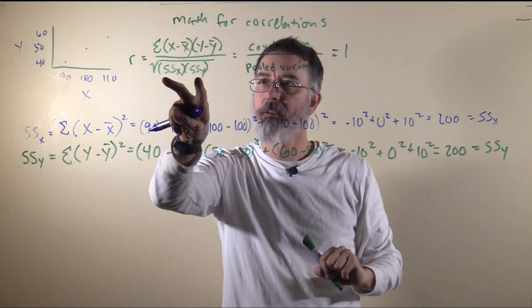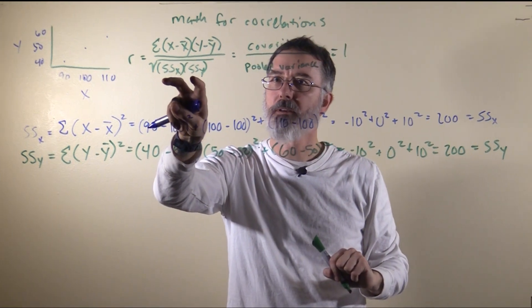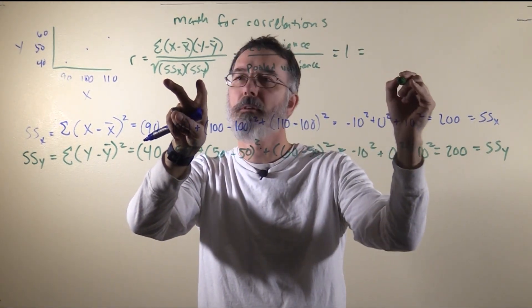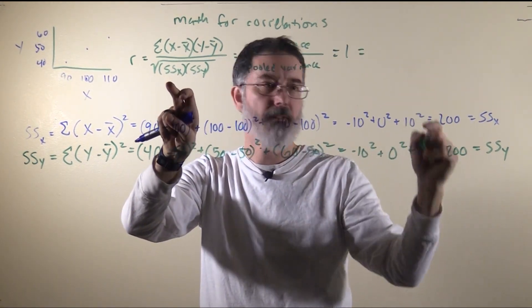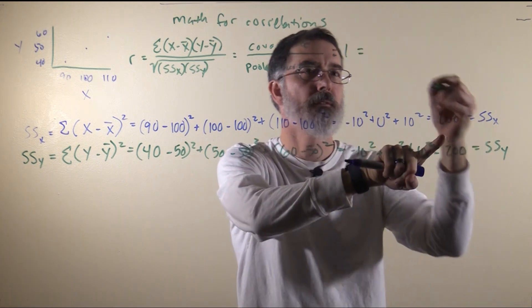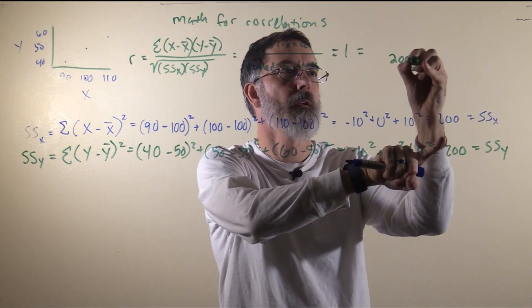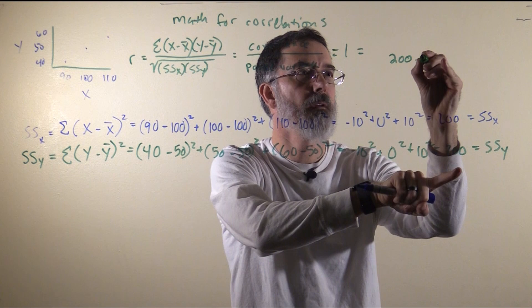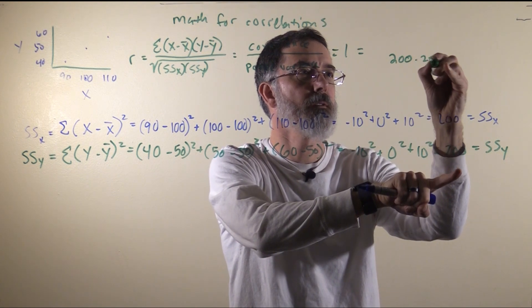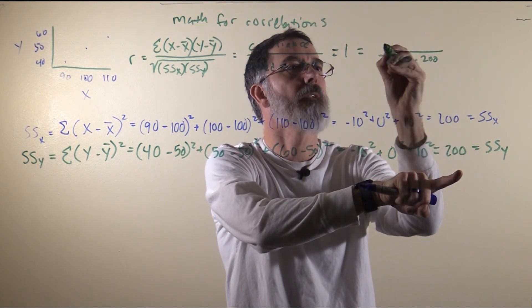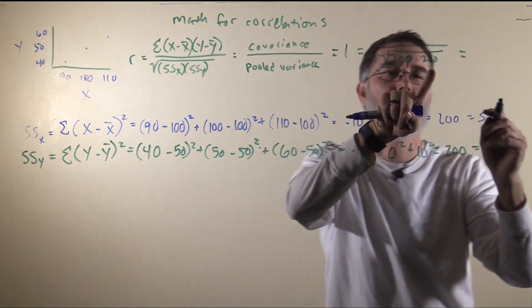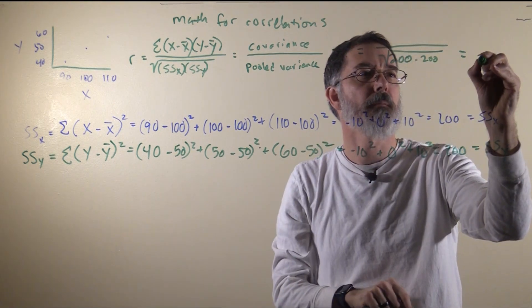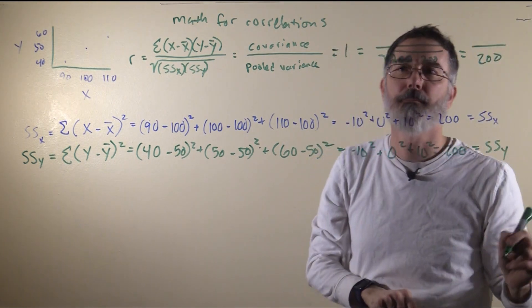We now have the two values that go into the denominator, so we can calculate that. The sum of squares x was 200, multiplied by the sum of squares y, which is 200. We take the square root of that — and since the square root of 200×200 is 200, the denominator equals 200.